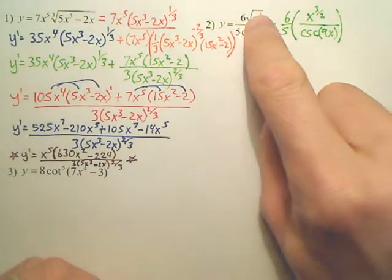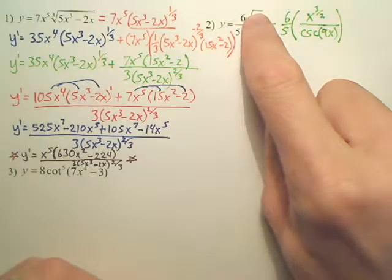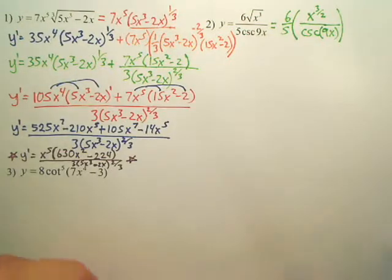Remember, when you have a square root, the root part, the 2, is on the bottom, the bottom of the tree. Roots at the bottom. So the 3 goes at the top, the root goes at the bottom.